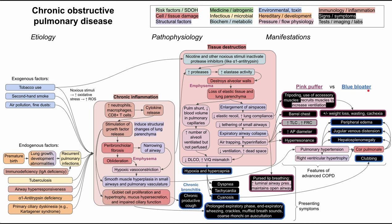The blue bloater, on the other hand, is like a super overweight person always coughing — they have that chronic productive cough. They're overweight partly because of water retention from peripheral edema and hepatosplenomegaly. They have right heart failure leading to fluid being stuck in their ankles and legs, and their jugular vein is distended. Blue bloaters tend to be more hypoxic, with worse hypercapnia and hypoxia than the pink puffer, and they are blue with cyanosis.